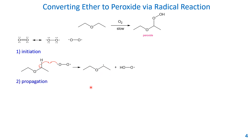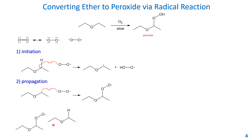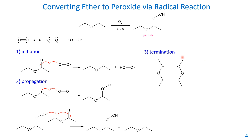In the propagation step, this alpha carbon radical reacts with another molecule of oxygen. The one radical on the alpha carbon combines with the diradical oxygen to form a peroxide radical. This peroxide radical then reacts with another molecule of ether, splitting its single bond: one hydrogen radical combines with the peroxide radical to form a peroxide product, and the other radical stays on the alpha carbon as a new alpha carbon radical. This alpha radical goes back to the first propagation step and keeps going.